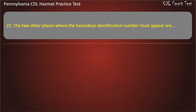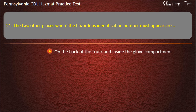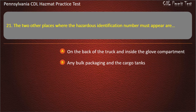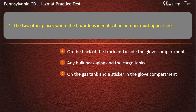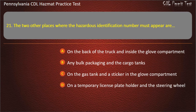Question 21. The two other places where the hazardous identification number must appear are: On the back of the truck and inside the glove compartment; Any bulk packaging in the cargo tanks; On the gas tank and a sticker in the glove compartment; On a temporary license plate holder and the steering wheel. Answer: Any bulk packaging in the cargo tanks.